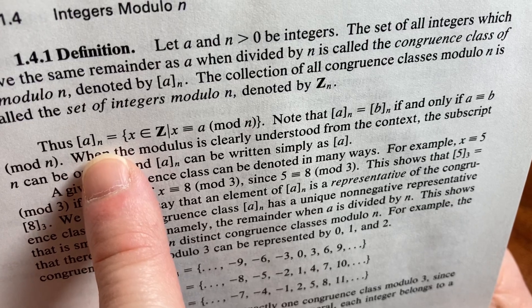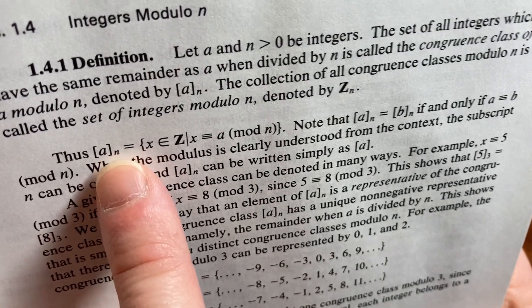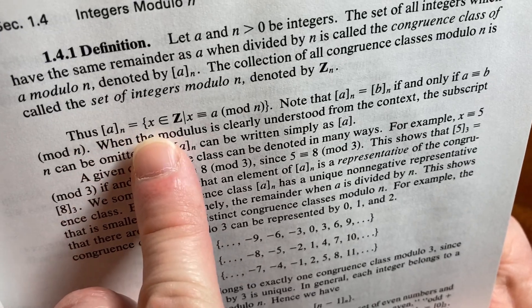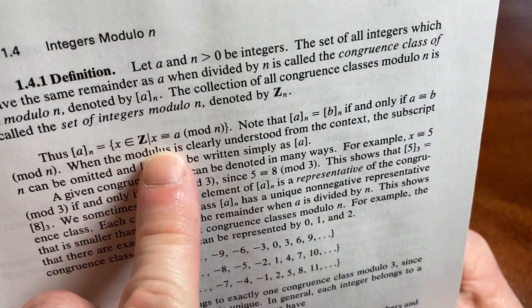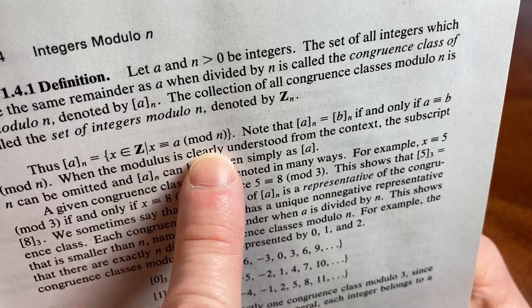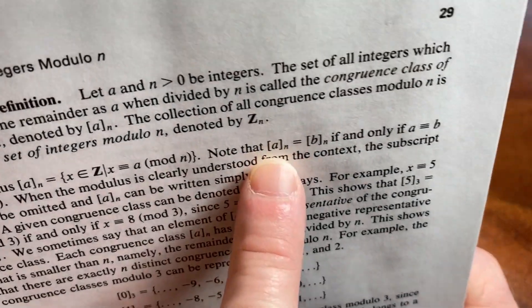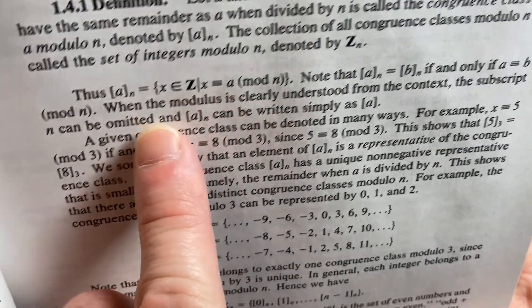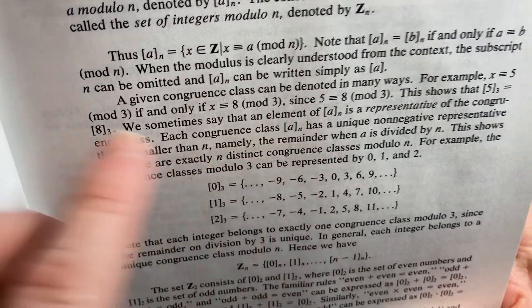Thus, and then here we have, right, the congruence class of a modulo n is the set of all x in z, such that x is congruent to a modulo n, right? Note that, and then we have this, if and only if, a equals b modulo n. Yeah, so really cool stuff.